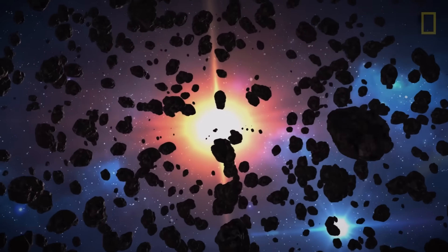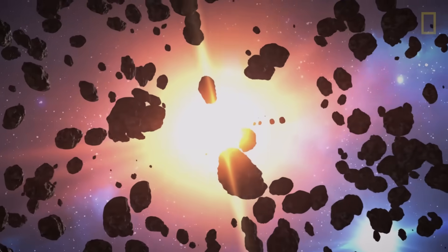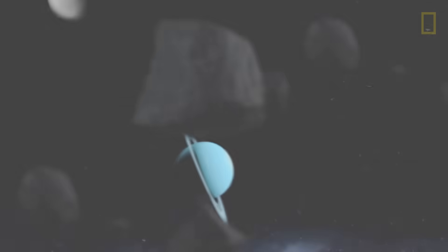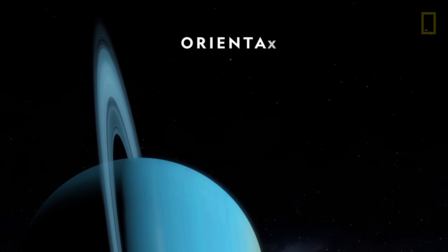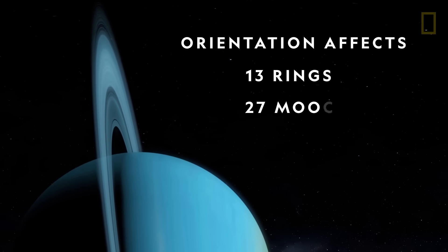This tilt, thought to be the result of Uranus' collision with at least one celestial body, has also affected the orientation of Uranus' 13 rings and 27 known moons.